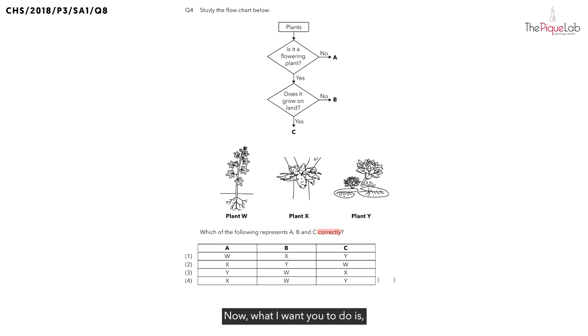Whenever it comes to flowchart questions, it is always good to prepare some highlighters so that we can identify what characteristics A, B and C will have. Take out your highlighter. I want you to highlight from the start of the flowchart and highlight towards A.